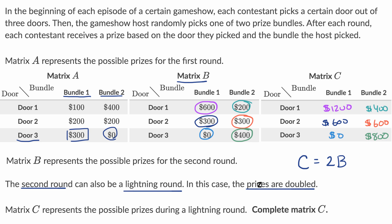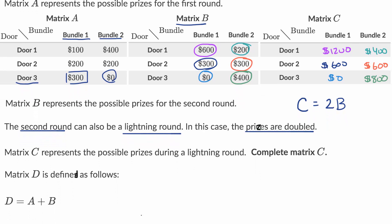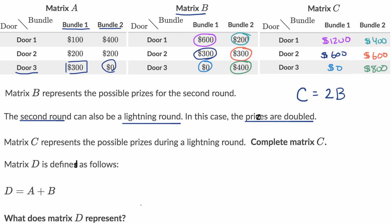There's one more question below the screen. Matrix D is defined as follows: D is equal to A plus B. What does matrix D represent? Pause the video and think about that for a second.